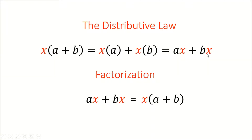Now, when we are factorizing using the distributive law, we're doing the reverse. So here, as you can see, we have ax plus bx, and we want to factorize ax plus bx. What is common to both terms is x. So we will take out the common term, and then use the common term to divide each term that was originally given to get the term inside of the bracket. So if you take ax divided by x, x divided by x would give you 1, and 1 times a would give you a, so you put a right here.